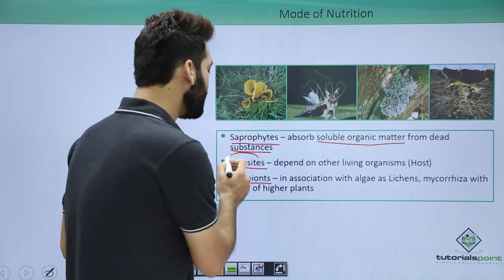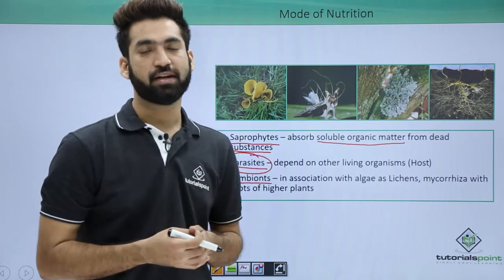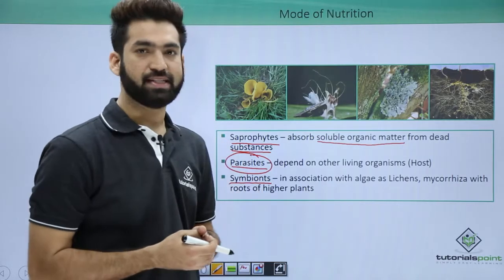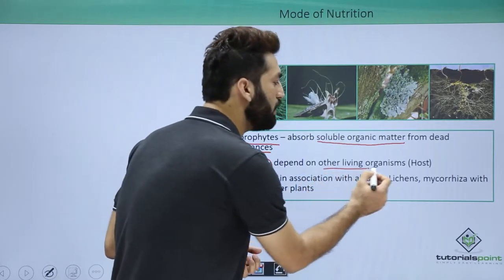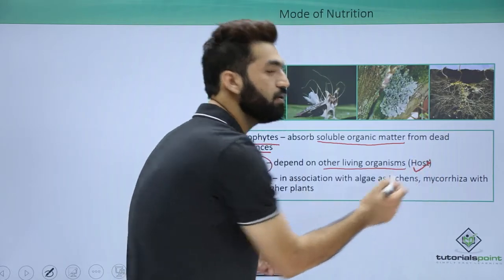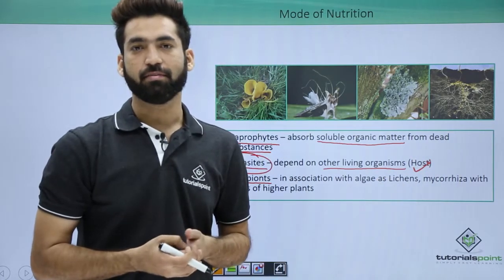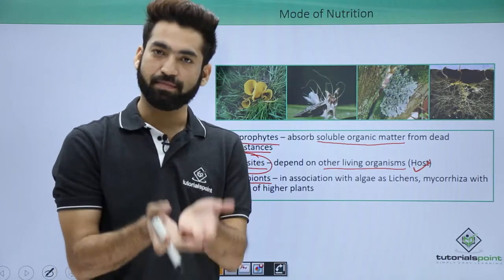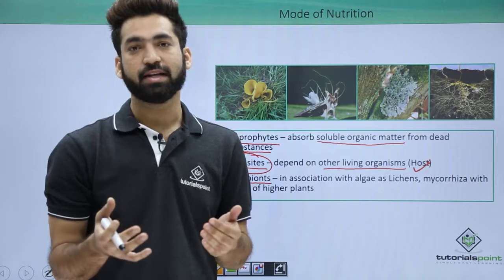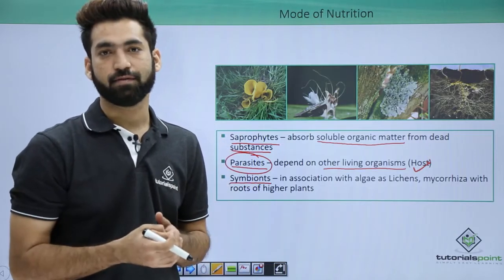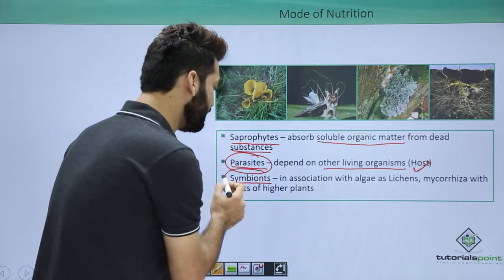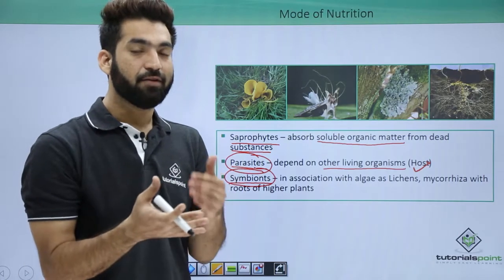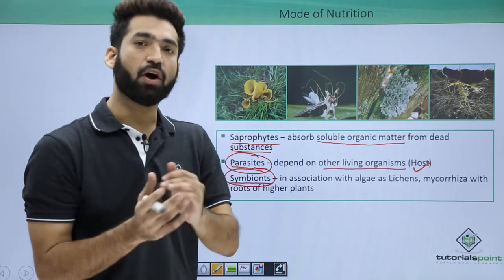When it comes to parasitic mode of nutrition, most fungi that are pathogens — that are disease-causing — are parasitic. They work upon living organisms, which become their host. For example, Paxenia infects wheat and grabs food from the wheat, but in turn Paxenia causes disease in the wheat. This parasitic relationship is also seen in higher plants.